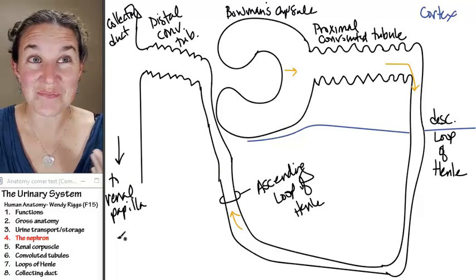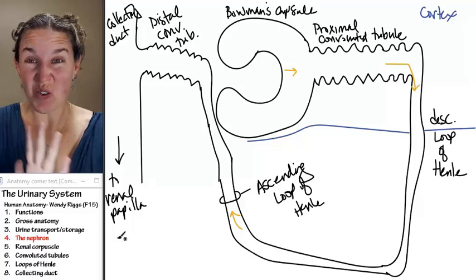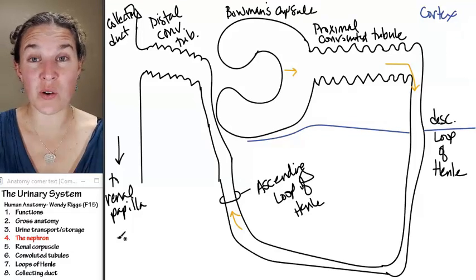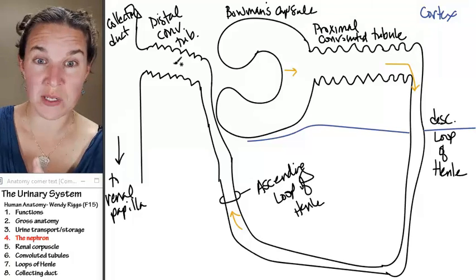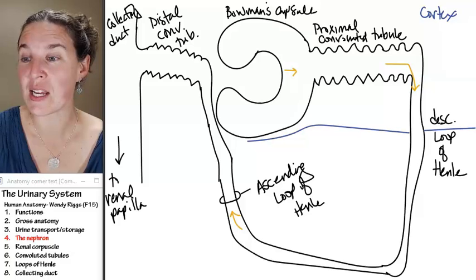The fluid that's inside here when it dumps into the renal papilla or it gets to the renal papilla, where is it going next? It's going to fall into a minor calyx. So this totally fits in with our gross anatomy. It's just the zoomed in version.